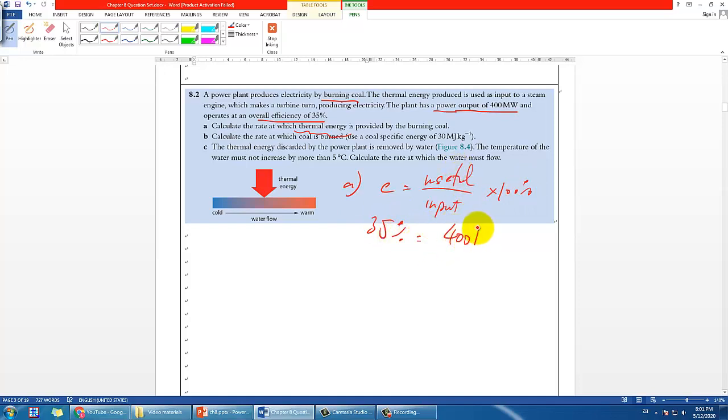So I'll just write the short form times 100%. So you have 35%, and then the useful is 400 megawatts, and then the input is what you find. So rearranging, the input power should be 1142.857 or something. Let's round it up to 3 significant figures, so 1140 megawatts. Of course you have mega here, so megawatts in that case. That's part A.